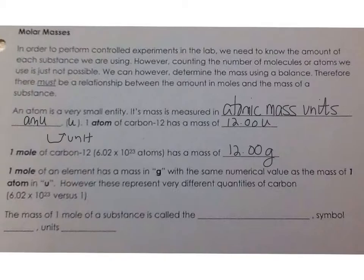One mole of carbon-12 has a mass of 12.00 grams. So, a mole of carbon-12, so 6.02 times 10 to the 23 atoms of carbon-12 has a mass of 12.00 grams. So, one mole of an element has a mass in grams with the same numerical value as the mass of one atom in U. However, these represent very different quantities. We're talking about 6 times 10 to the 23 atoms versus one atom.